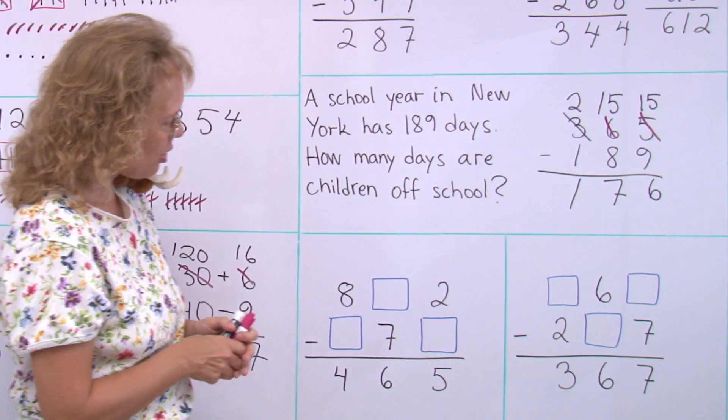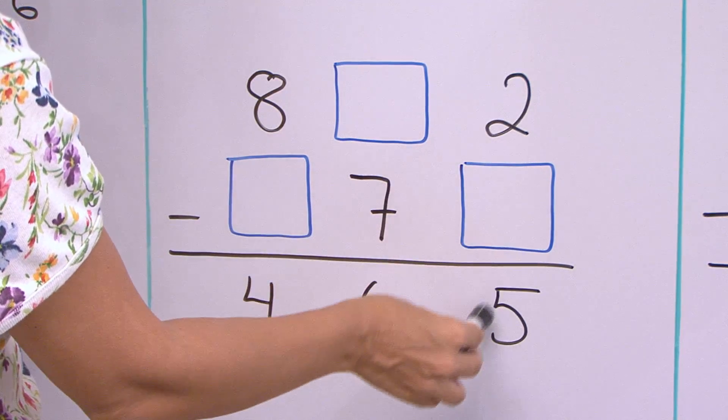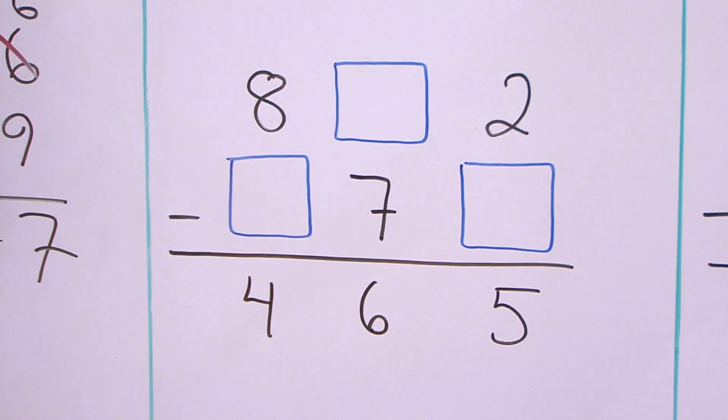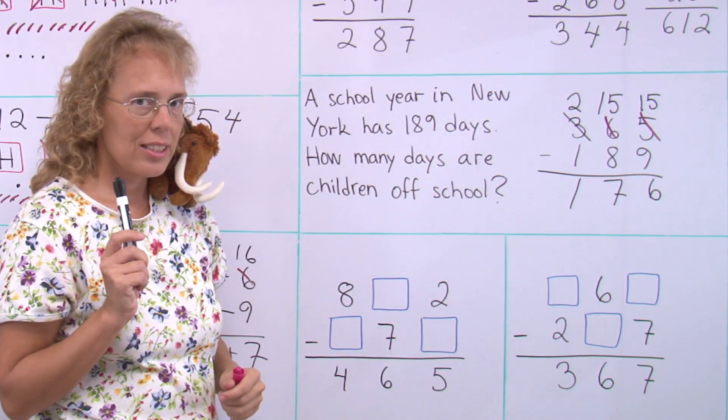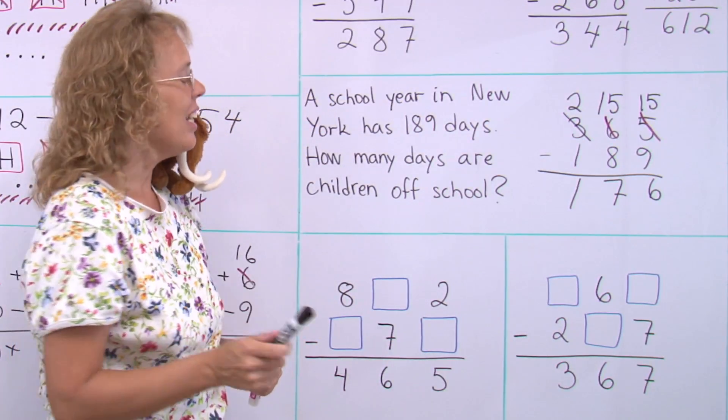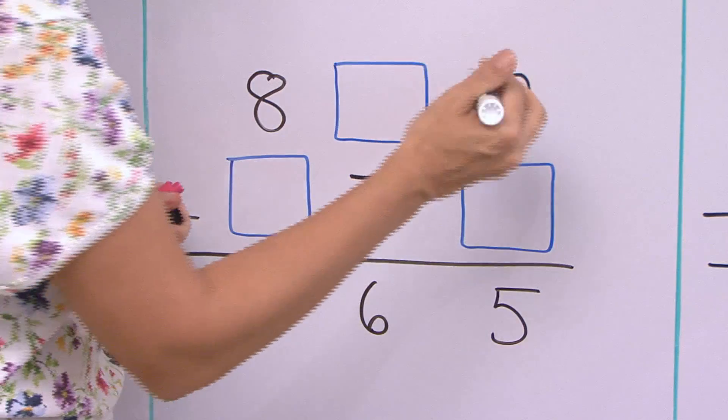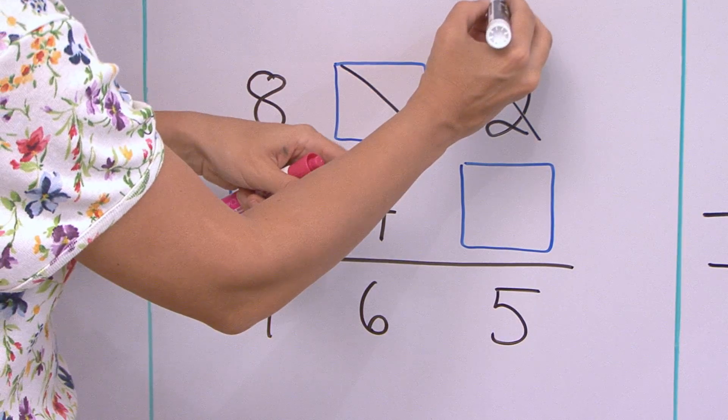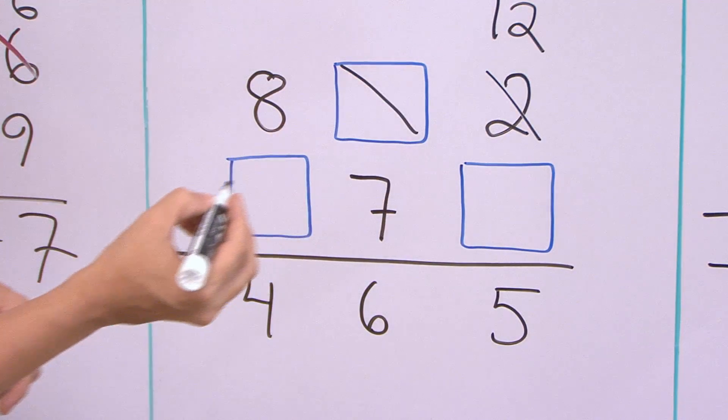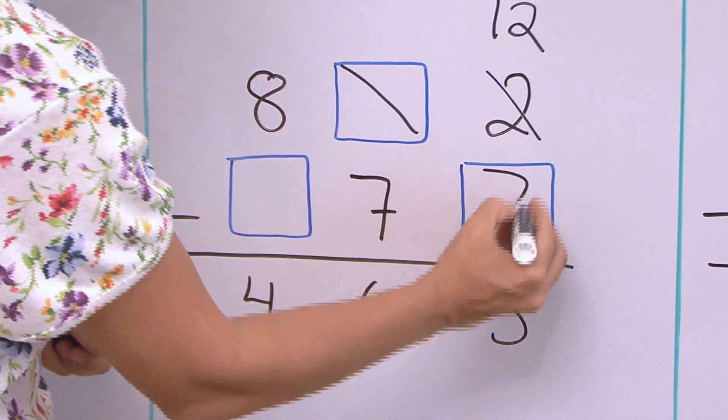Let's try solve these together now. Two minus something leaves five. Well, there isn't any number that would go there. Unless we have regrouping. Like I told you, there's a regrouping here. So actually, whatever was here was crossed out. And then here became twelve. So now we can find out that seven goes here.